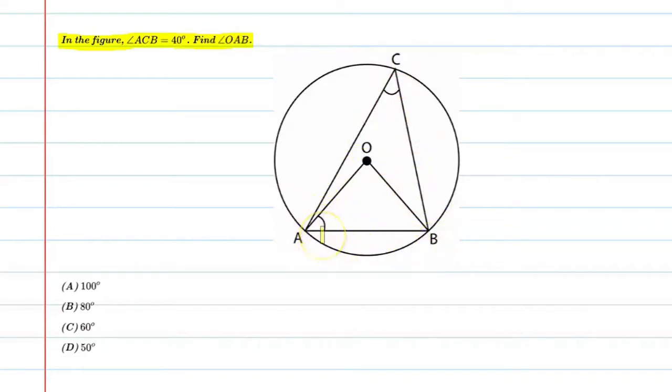We need to find angle OAB. So, let's see how to find it. Before starting, I want you to understand one thing. If you look at the figure, in triangle OAB, OA is equal to OB because both are radii of the circle, and the opposite angles will be equal.